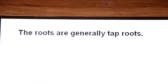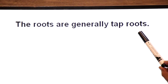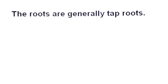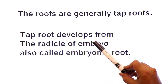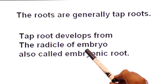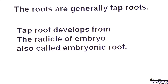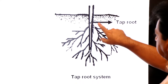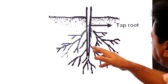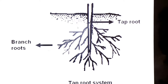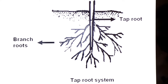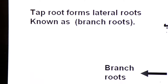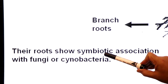Aab hum aate hain in ki roots ki taraf. The roots are generally taproots. Taproot aisi root ko kaha jata hai jo ke embryo ke radicle se develop hoti hai — also called the embryonic root. Yaha pe dekhen, this is the taproot system. Taproot se pehle primary root, phir secondary root, phir tertiary, phir lateral branches appear hote hain — so it gives off lateral roots known as branch roots.